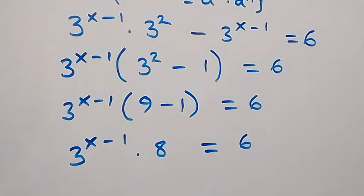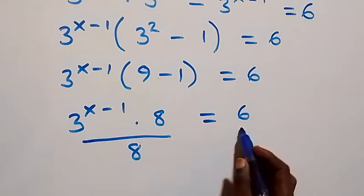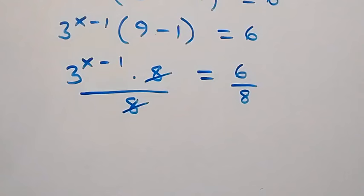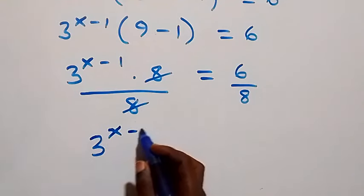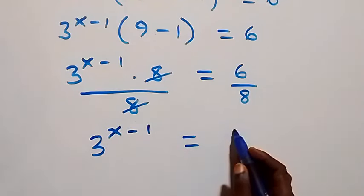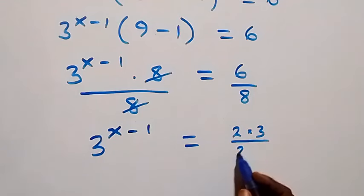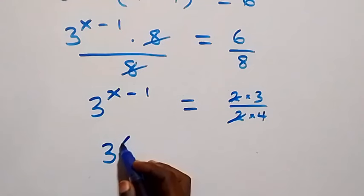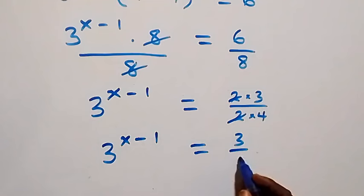Now let's divide both sides by 8 — divide this side by 8 and also this side by 8. The 8s cancel each other, so we have 3 raised to power x minus 1 equals to 6/8, which we can write as 2 times 3 over 2 times 4. Cancelling, that gives 3 raised to power x minus 1 equals to 3 over 4.